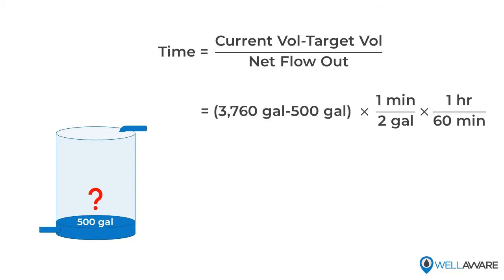3,760 gallons, which is our current reading, minus 500 gallons, which is our target reading. So we get to a difference of 3,260 gallons. We divide that by 2 gallons per minute flow, divided by 60 minutes per hour, and we see that we have a little over 27 hours until the tank has 500 gallons left.